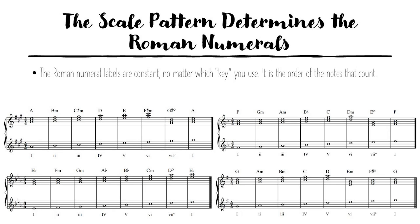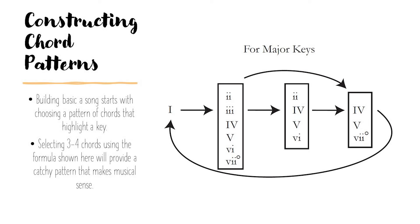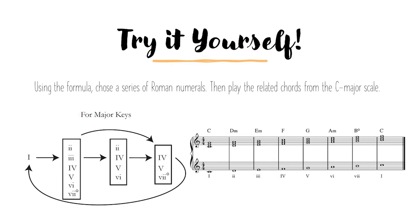It's important to notice how the Roman numerals are constant no matter which key you decide to use — it is the order of the notes built on that scale that count. Once you have your scale and the different kinds of chords built from that scale, you could use these basic chords to build a song by choosing chord patterns that highlight a particular key. Selecting three to four chords from the formula shown here will provide a catchy pattern that makes musical sense. Take a moment, maybe pause the video, and experiment with this formula — choose a series of chords based on the Roman numerals from this graph and play those chords as they relate to the C major scale. If you follow the pattern you should find that it makes a certain sort of musical logic.